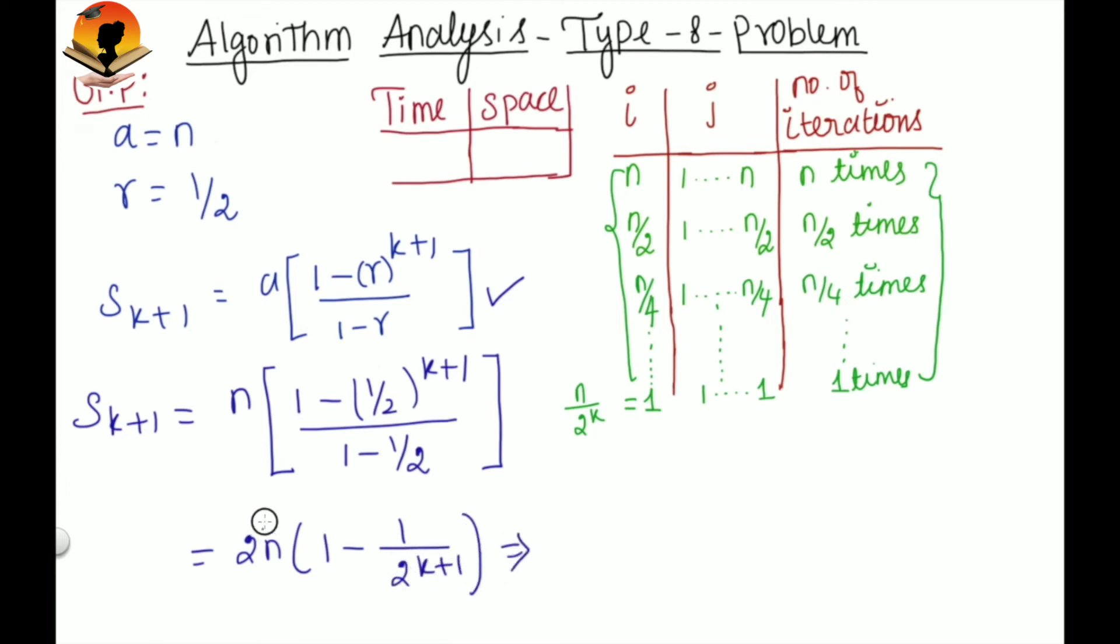And you can bring this 2n inside. So 2n minus 2n by 2 power k into 2. Because we can separate this 2 power k into 2. Now you can rewrite this n as 2 power k because here we can bring this 2 power k to this side.